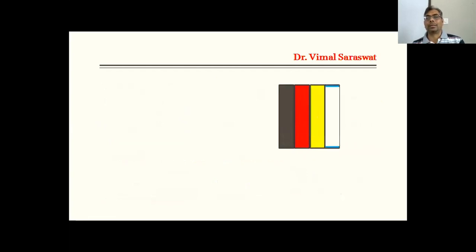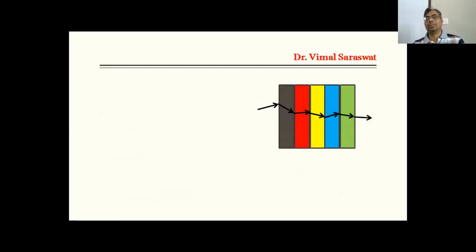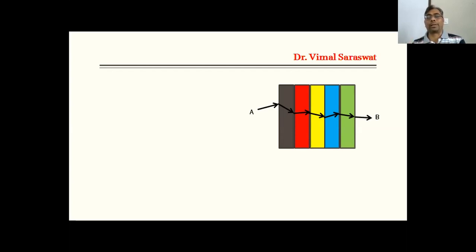Now there are a number of media. A ray is coming from the left and it moves towards the right by a number of reflections or refractions, with a number of media in between. A and B are the first and last points of the ray. From Fermat's Principle of Stationary Time or Extremum Path, the integral from A to B of ds over v is either maximum or minimum.